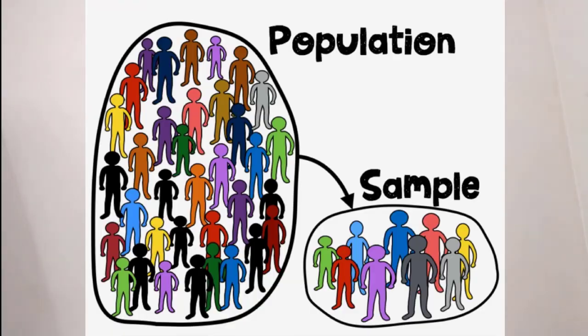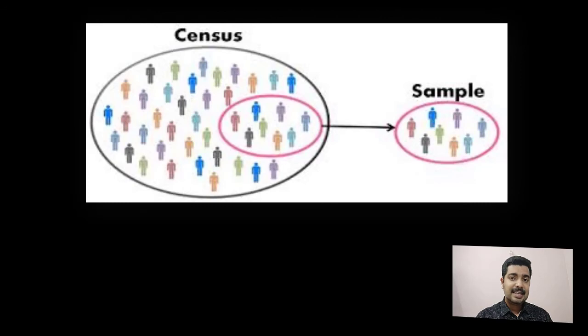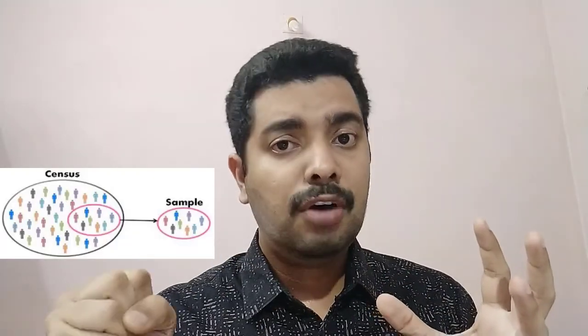Sampling makes a researcher's life easy. Otherwise, we would have to do research on the entire population. So we have two things here: one is census and one is sampling. Census means you are doing the research on all 10 crore children — that is what is known as census. It takes a lot of time. Sampling, on the contrary, means taking only a selective portion of people from the entire population. So a sample is a portion of the census.